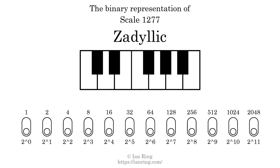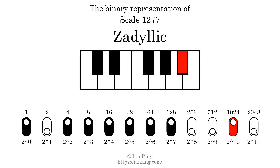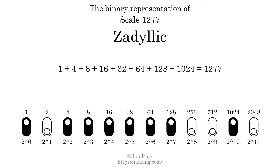The binary representation of this scale is determined by mapping tones of the scale to the binary digits. Each binary digit represents a power of 2. To get the scale number, we add the powers of 2 together. The powers of 2 that are present in the scale, all added together, equals 1,277. That is why the scale number, in decimal, is 1,277.